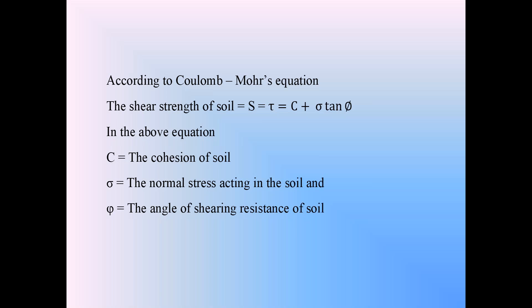We have basically two types of soils: cohesionless soil and cohesive soil. If the cohesion is zero — if there is no attraction between the soil particles, like in sand — we call that soil cohesionless soil. In cohesionless soil, cohesion C becomes zero, so the shear strength is given by S equals tau equals sigma tan phi.